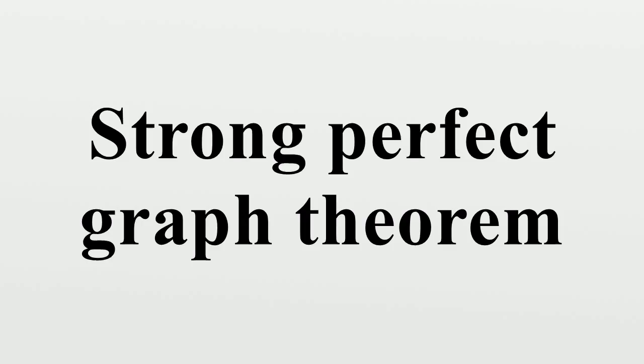The graphs having neither odd holes nor odd anti-holes became known as the Berge graphs. Berge conjectured that every Berge graph is perfect, or equivalently that the perfect graphs and the Berge graphs define the same class of graphs.